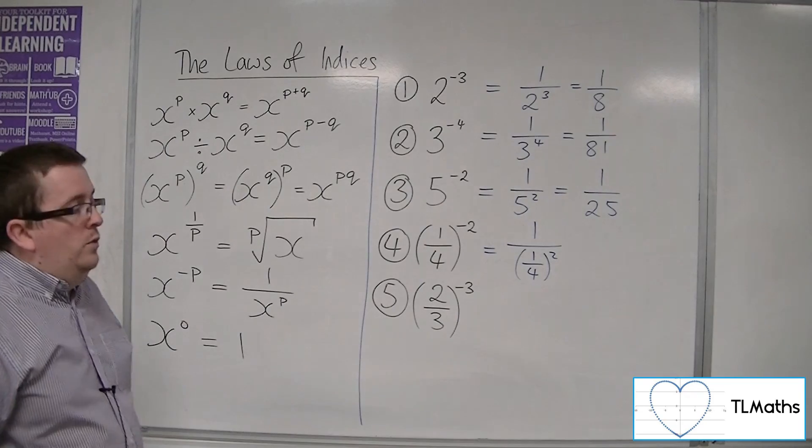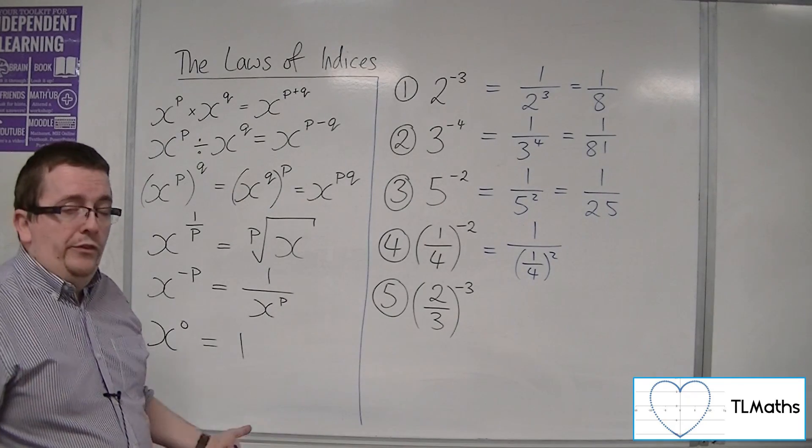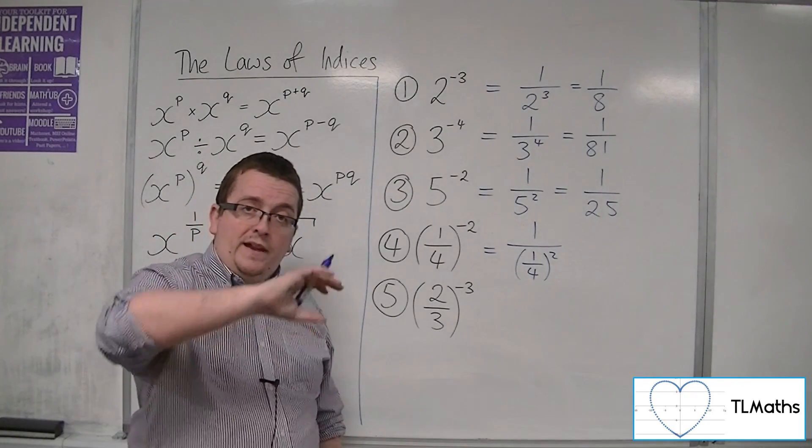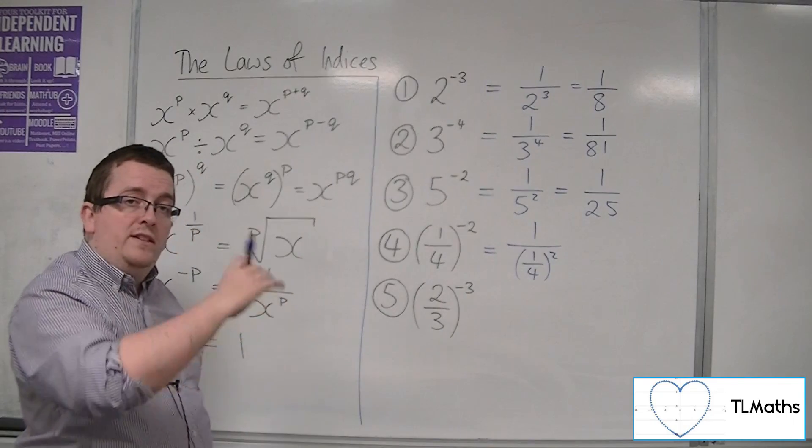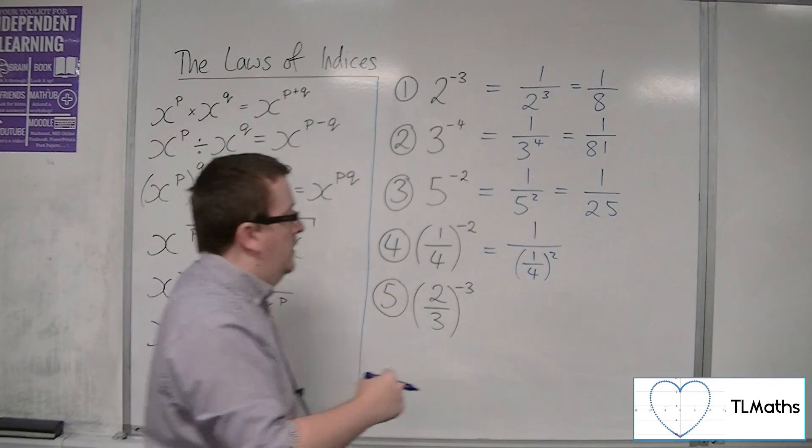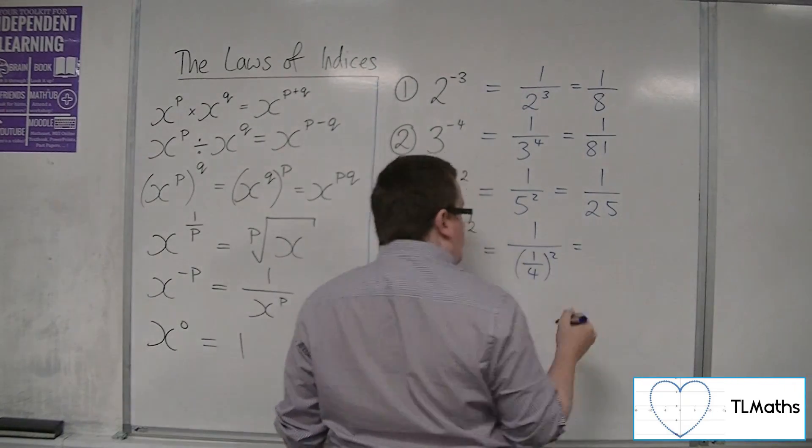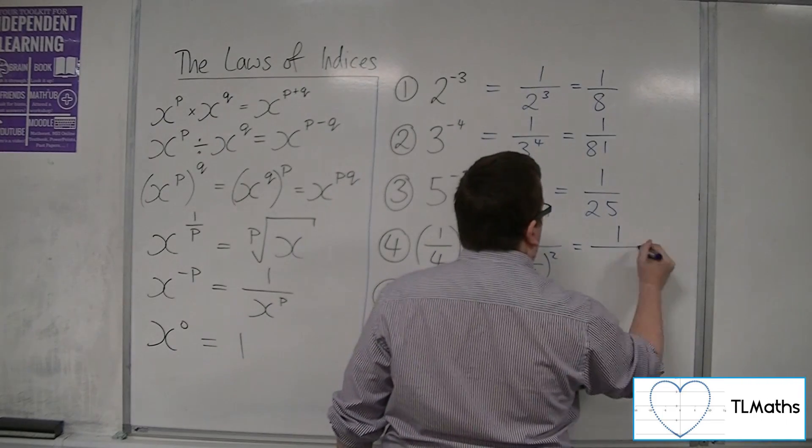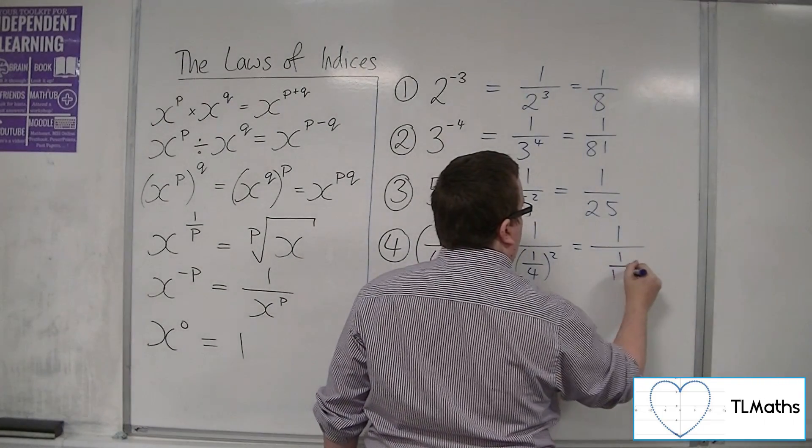So then you just need to do a quarter squared. When you're doing that, you're squaring the numerator, squaring the denominator. So what we have is 1 over 1 squared over 4 squared.